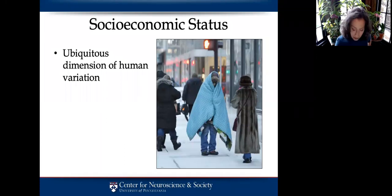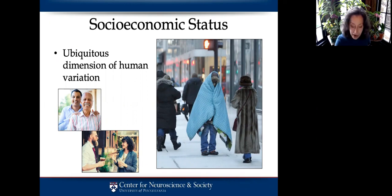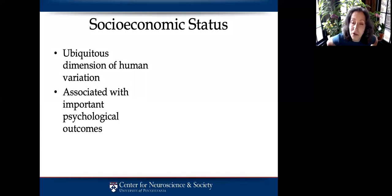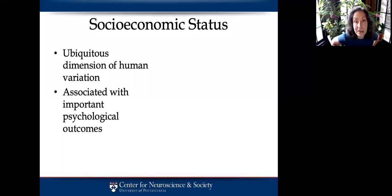Interestingly, other demographic variations like age, sex, and/or gender we know more about. But in recent years, we have learned that like these other important dimensions of variation, SES is associated with all kinds of important psychological outcomes. And indeed, low levels of SES are associated with problems and suffering, so trying to understand how that comes to be could have important societal benefits.